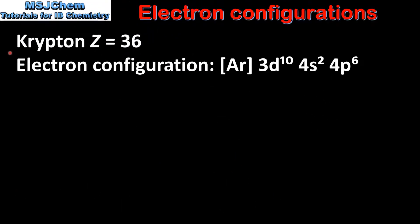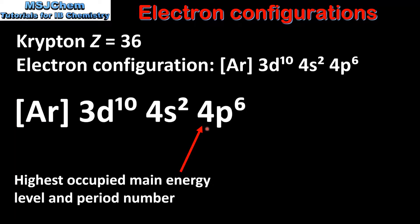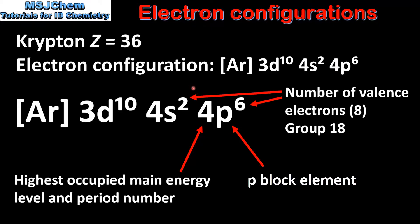The next example is krypton, atomic number 36, electron configuration [Ar] 3d10 4s2 4p6. The 4 is the highest occupied main energy level and the period number, so krypton is in period 4. The 4p sublevel is being filled, so krypton is a P block element. The valence electrons are the 2 in the 4s sublevel and the 6 in the 4p sublevel, giving a total of 8 valence electrons, so krypton is in group 18.